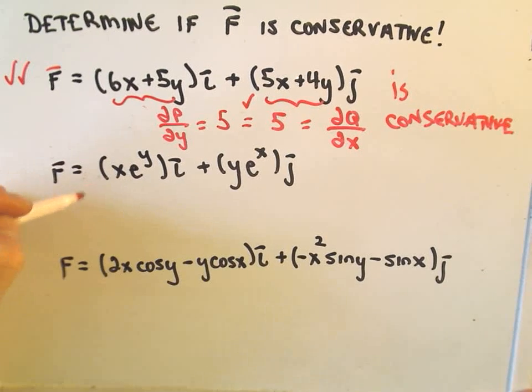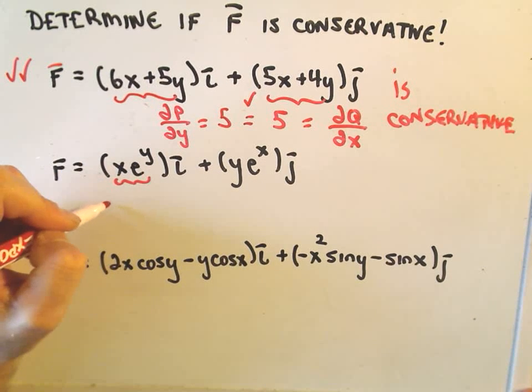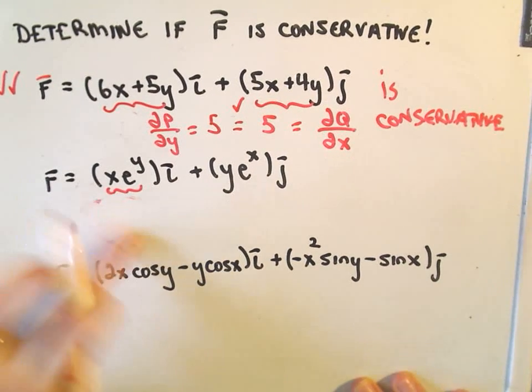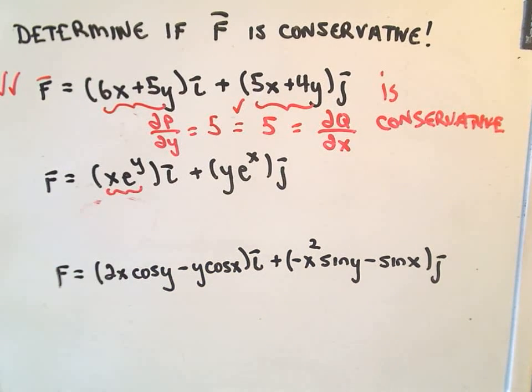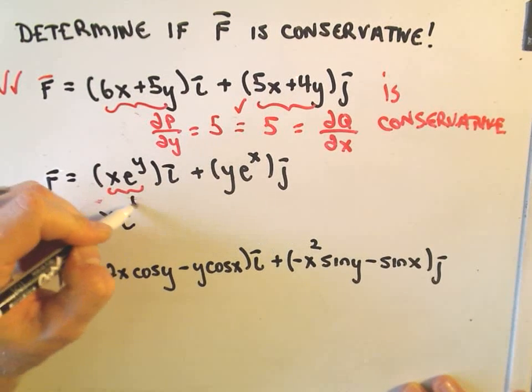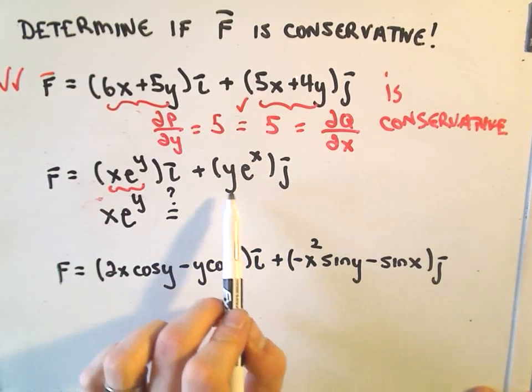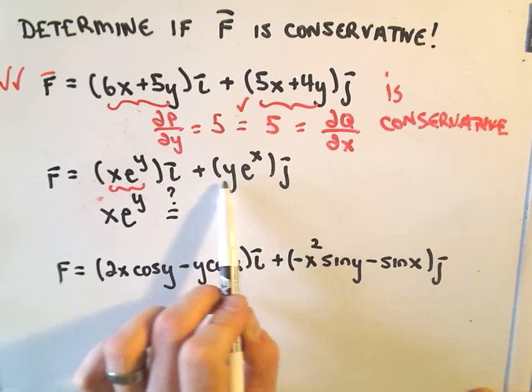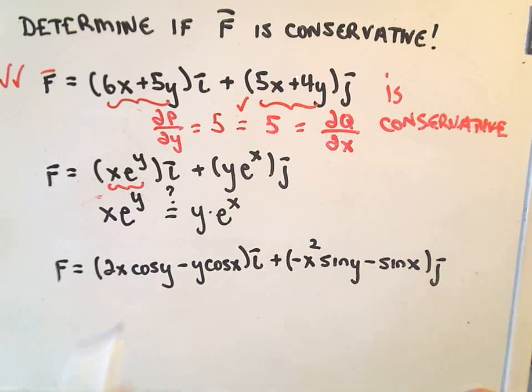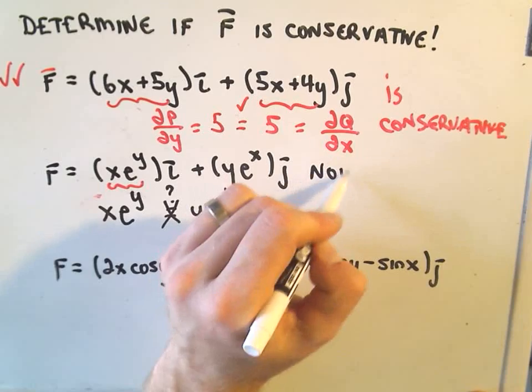So let's look at the second one here. If we take the partial of P with respect to Y, it looks like we'll simply get XE to the Y. So if we take the partial of this with respect to Y, we'll simply get XE to the Y, because the derivative of E to the Y is just E to the Y. If we take the partial of the second part with respect to X, we'll simply get Y times E to the X, but certainly those are not equal, so we would say this is not conservative.